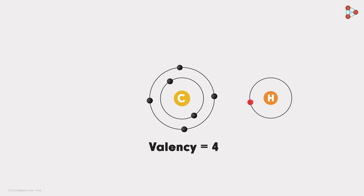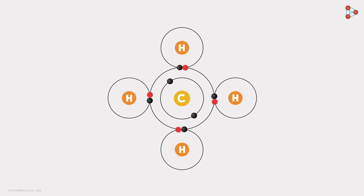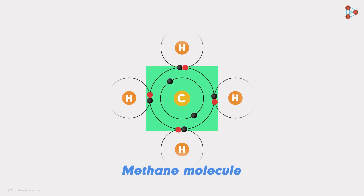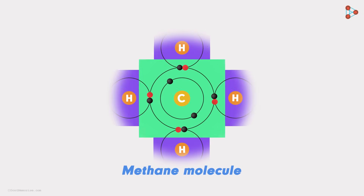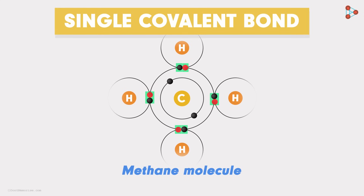This single carbon atom can share its 4 valence electrons with 4 different hydrogen atoms. It makes sure that each hydrogen atom attains stability by having 2 electrons in its shell, and even carbon gets 8 electrons in the outermost shell. One electron from each hydrogen atom makes 4, and there are already 4 valence electrons with carbon — these sum up to attain the octet state. This is how a methane molecule is formed: a single carbon atom bonded with 4 hydrogen atoms, where each bond is a single covalent bond.